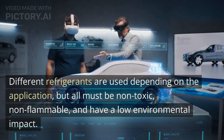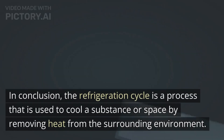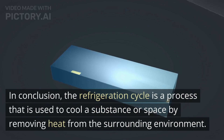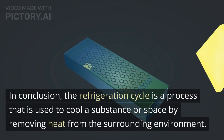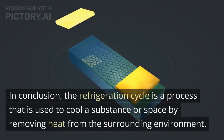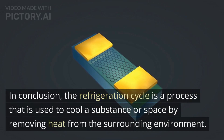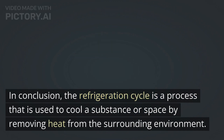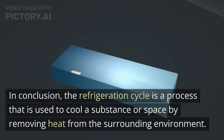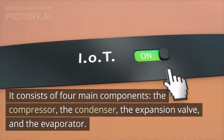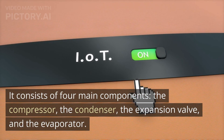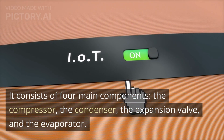In conclusion, the refrigeration cycle is a process that is used to cool a substance or space by removing heat from the surrounding environment. It consists of four main components: the compressor, the condenser, the expansion valve, and the evaporator.